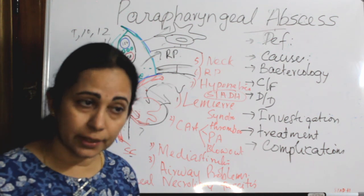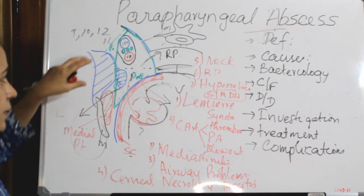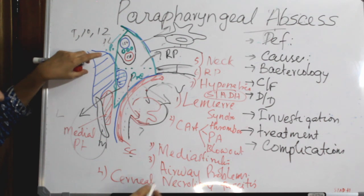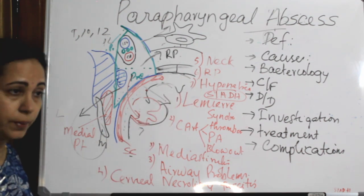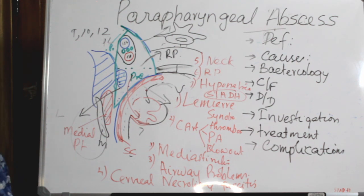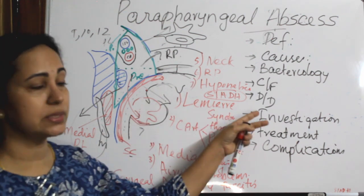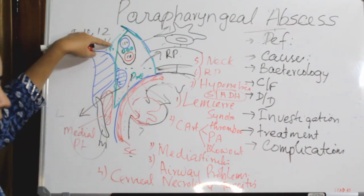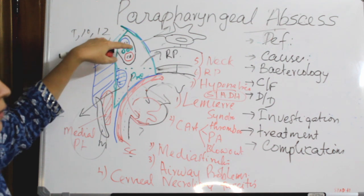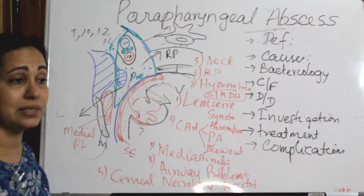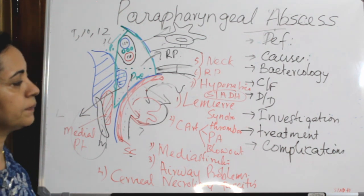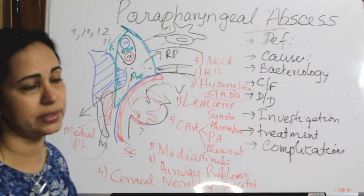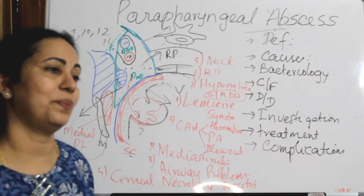To summarize: parapharyngeal abscess is a collection of pus in the parapharyngeal space, mainly caused by tonsillitis or peritonsillar abscess. It is a polymicrobial infection primarily involving Streptococcus viridans and Klebsiella pneumoniae. Differential diagnosis falls under infective, neoplastic, and vascular headings. Investigation of choice is contrast-enhanced CT scan. Treatment is conservative with IV antibiotics first; if no improvement after 48 hours, surgical drainage is performed. Key complications include Lemierre's syndrome, carotid blowout, mediastinitis, and necrotizing fasciitis.